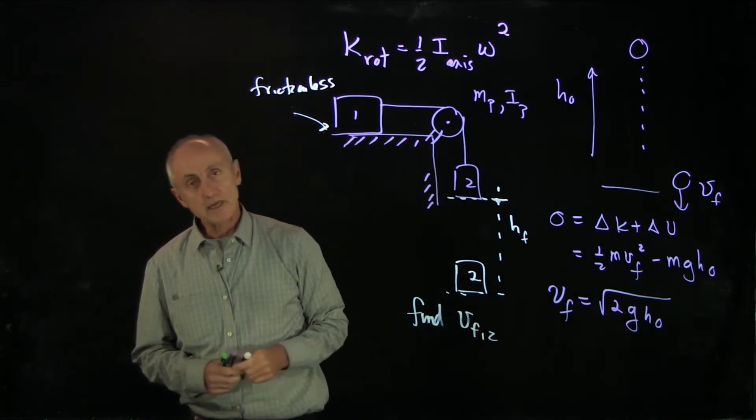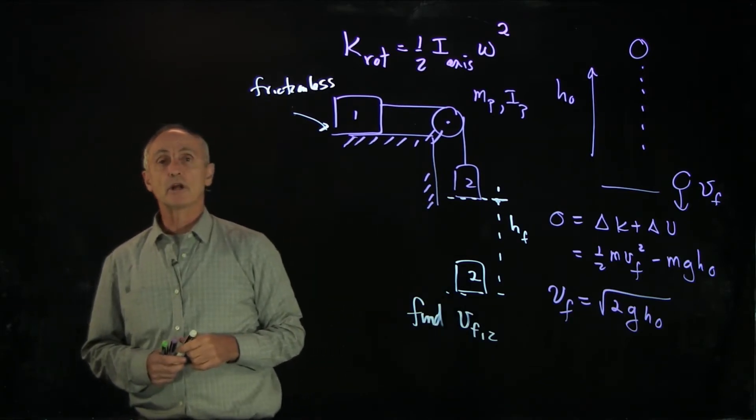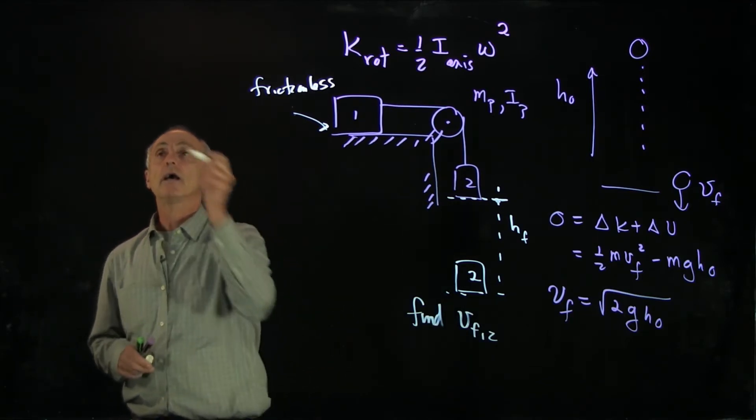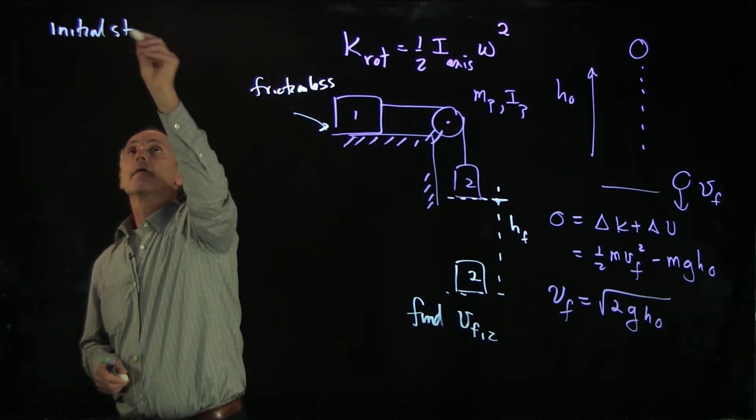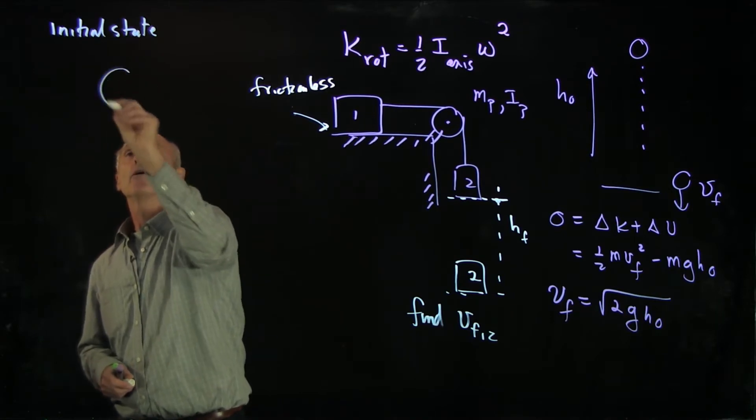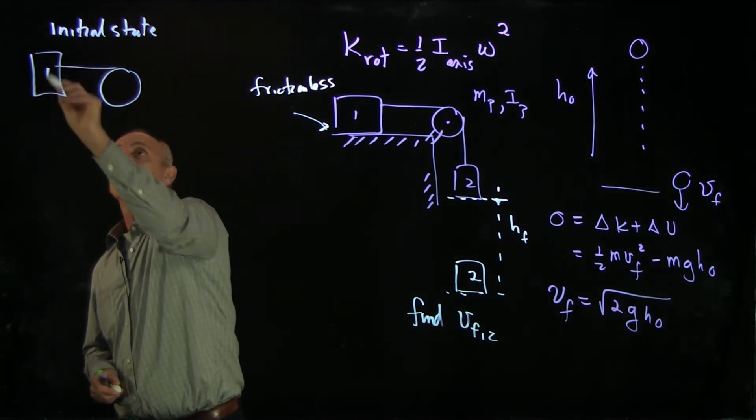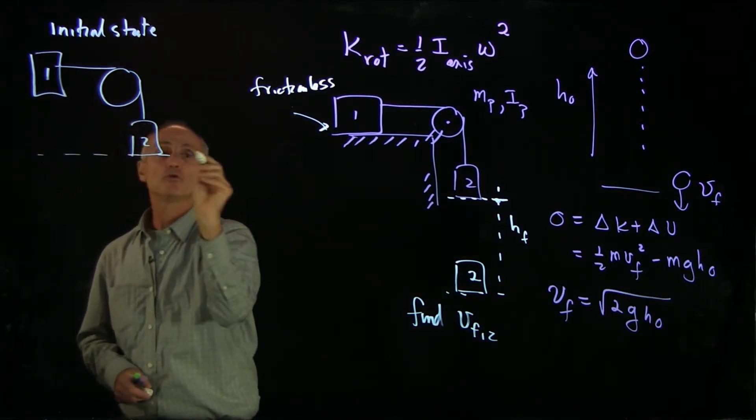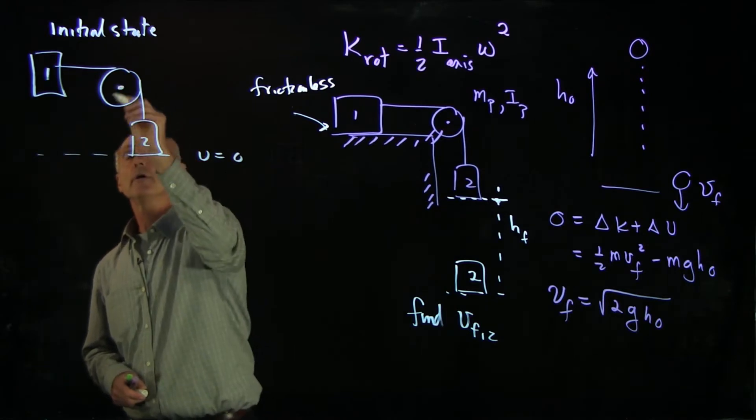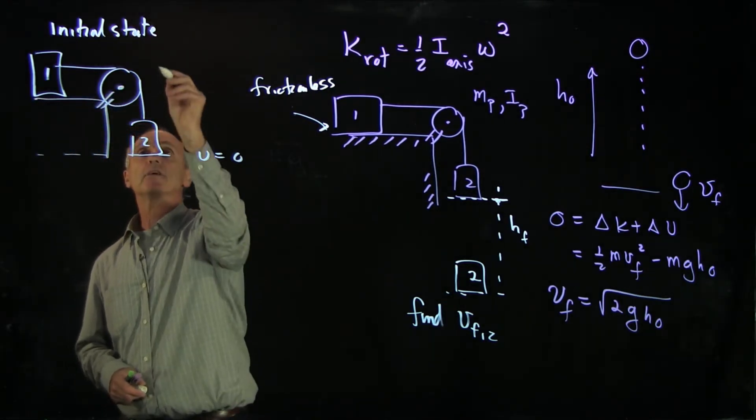We begin in the same way we've done this before by considering our energy diagrams. We'll have an initial state. In our initial state, we'll just have the initial 1, 2. I'm going to choose u equals 0. Here's my pulley. Everything is at rest.